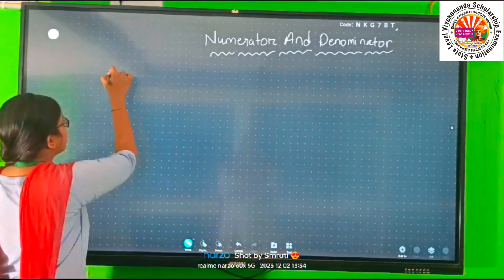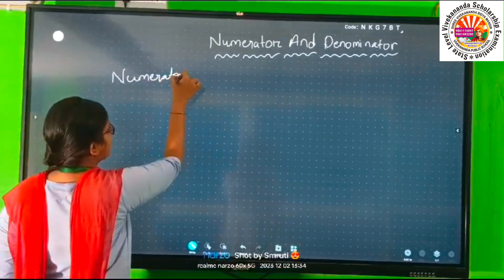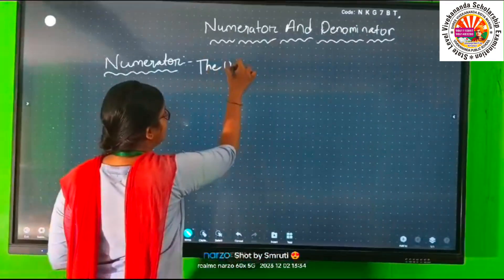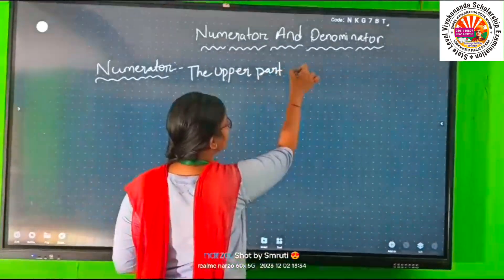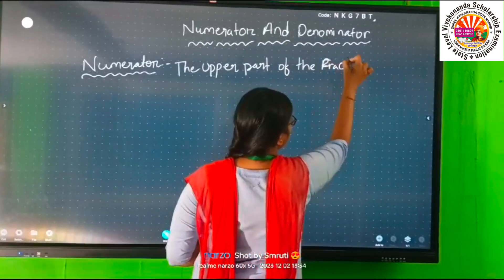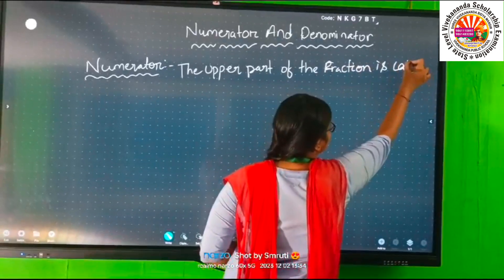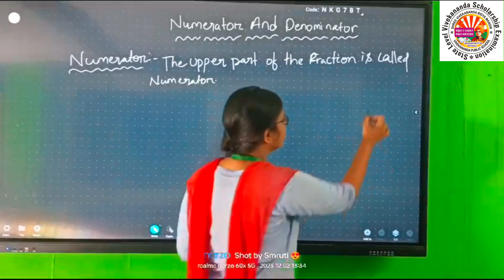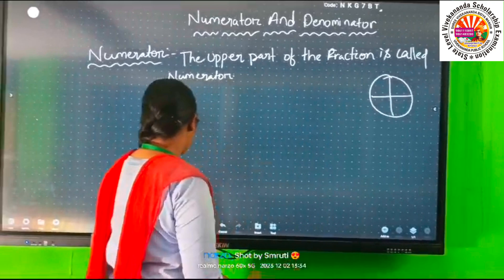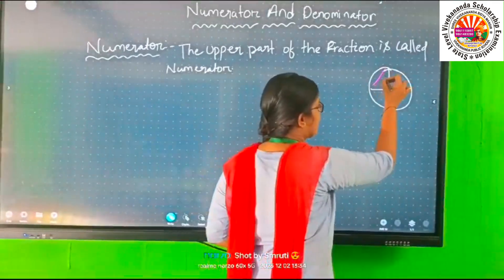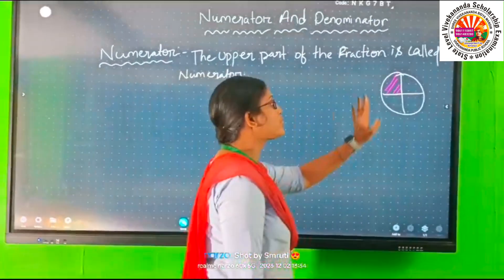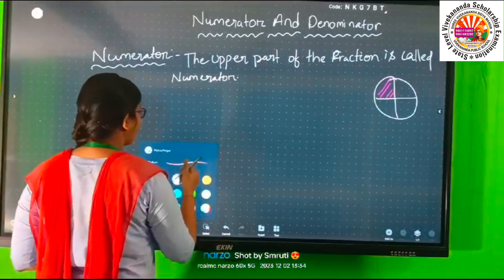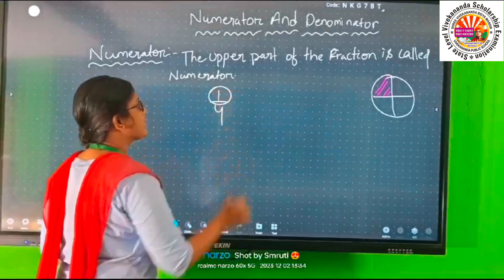First, we are making the numerator clear. The upper part of the fraction is called the numerator.